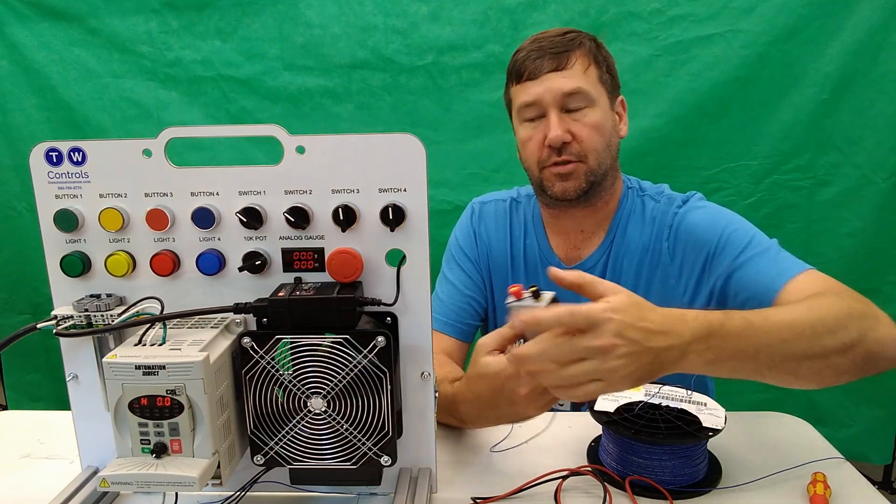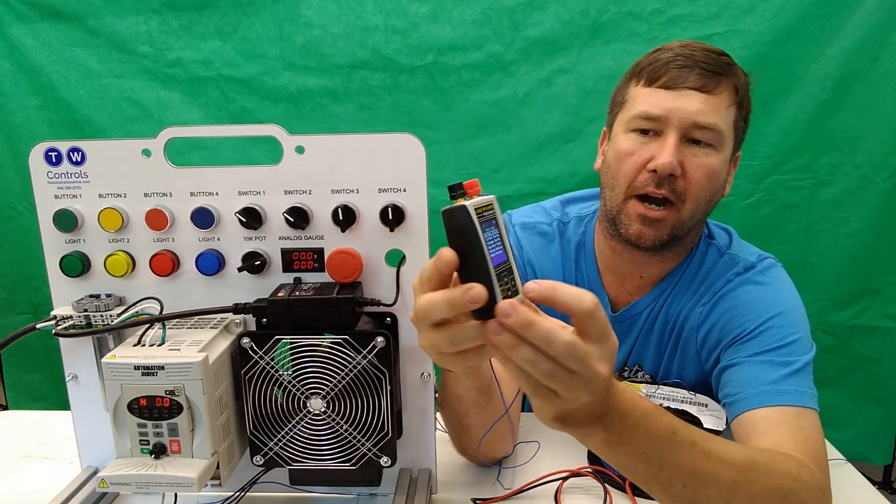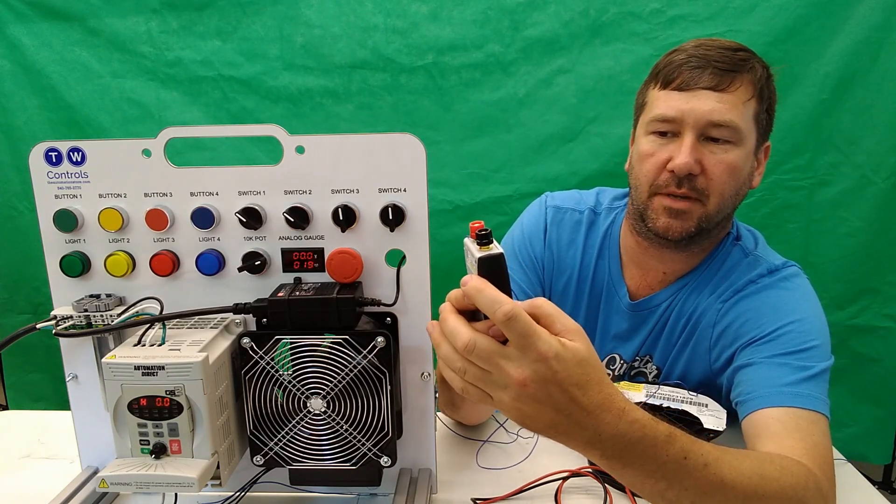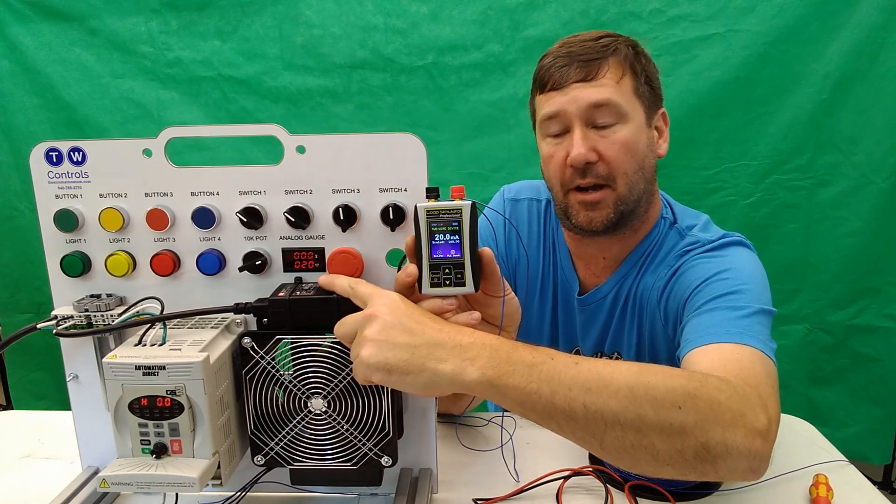All right, so I have this wired for milliamp now, which will be this lower display and we're going to go to current two wire mode and we can bring this up. I'm going to take it up to 20 milliamp. You see it says 20 milliamp right here and also says 20 milliamp right here.